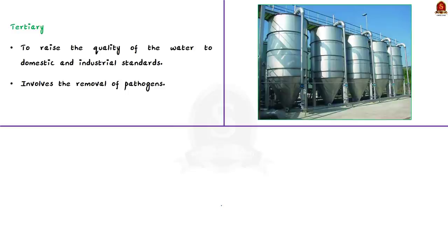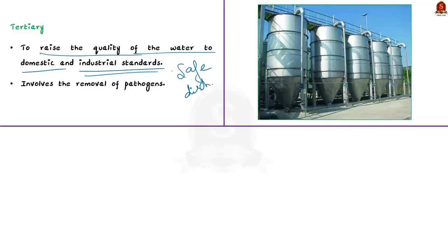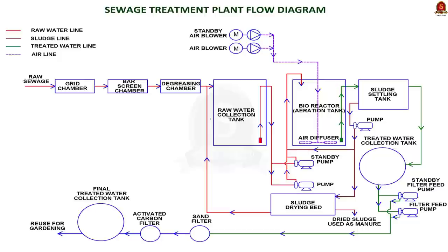Tertiary wastewater treatment aims to raise the quality of the water to domestic and industrial standards or to meet specific requirements around safe discharge. In the case of water treated by municipalities, tertiary treatment also involves the removal of pathogens, ensuring water is safe for drinking. The STP model contains a raw water collection tank, aeration tank, sludge settling tank, carbon filter, etc. It also has a sludge drying bed — the dried sludge is used as manure, since sewage is rich in organic matter.